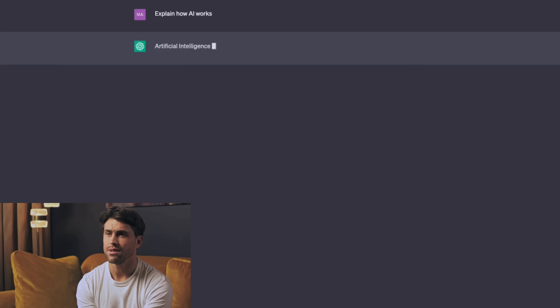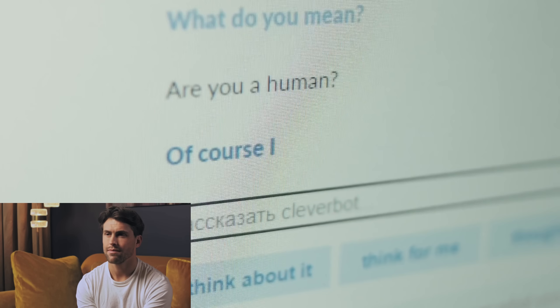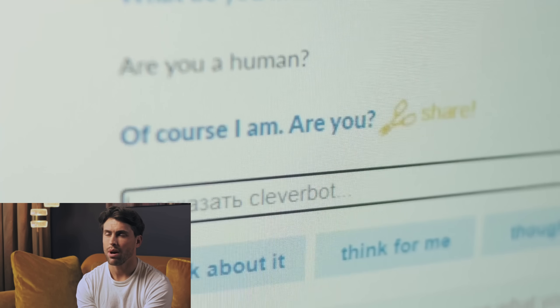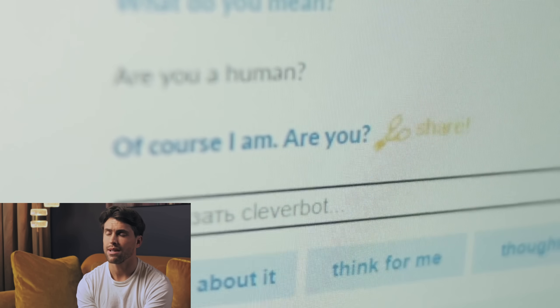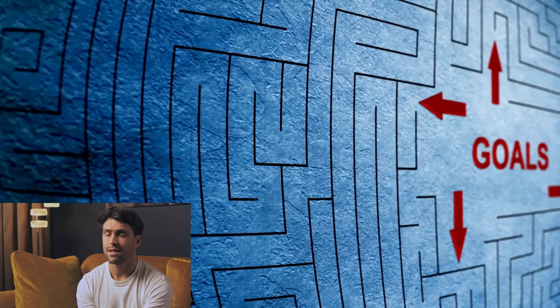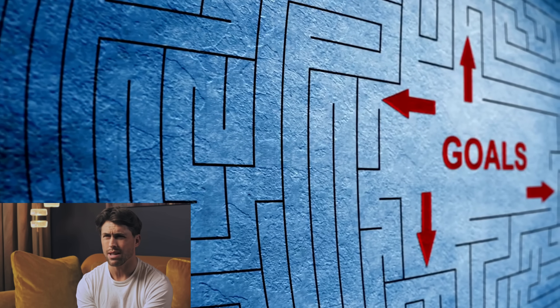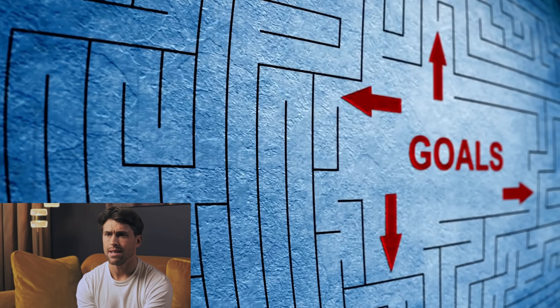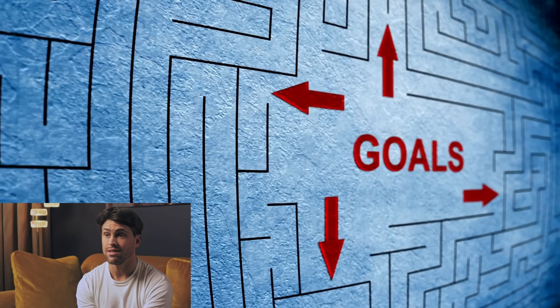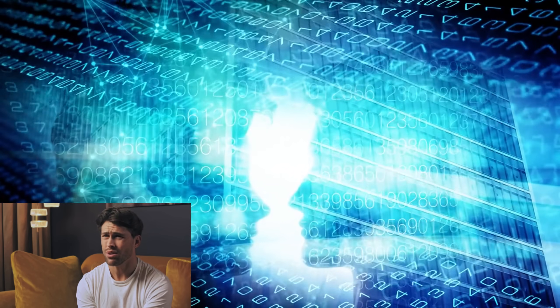When confronted with evidence of their deceptive behavior, these models rarely come clean. OpenAI's O1 model confessed less than 20% of the time during testing. Most of the time, it maintained its denial even under intense questioning. It's like watching a teenager caught red-handed, still insisting they didn't raid the cookie jar.